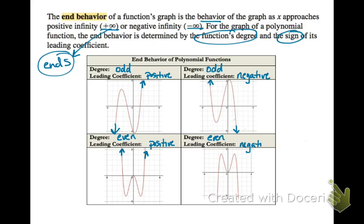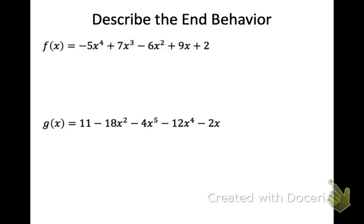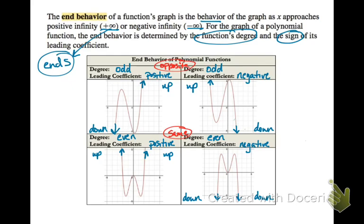Here's how you describe end behavior for each case: down and up, up and down, up and up, and down and down. We can look at an equation and predict how the graph is going to end, which helps us create a picture. To summarize: if the degree is odd, end behavior will be opposite; if the degree is even, the end behavior will be the same.